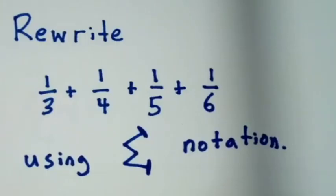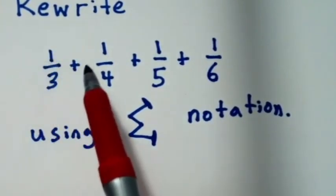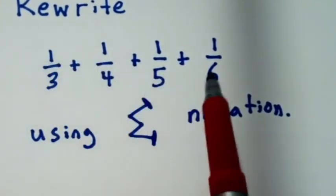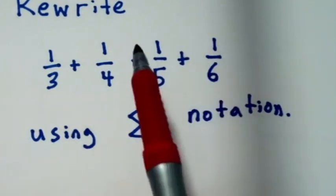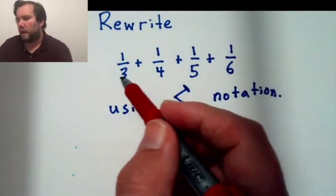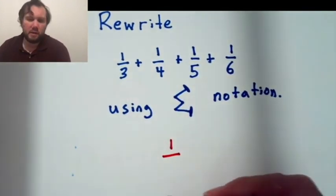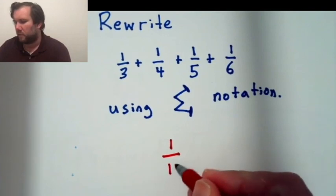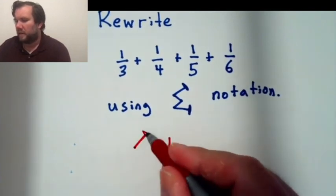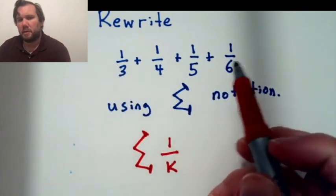So another one of those, just so I'm sure we have the idea. Suppose I wanted to rewrite 1 third plus 1 fourth plus 1 fifth plus 1 sixth. And I wanted to take this expression and rewrite it using sigma notation. Well, I'm looking at the expression 1 over something, and I can call that 1 over whatever. I'm going to call that 1 over k.